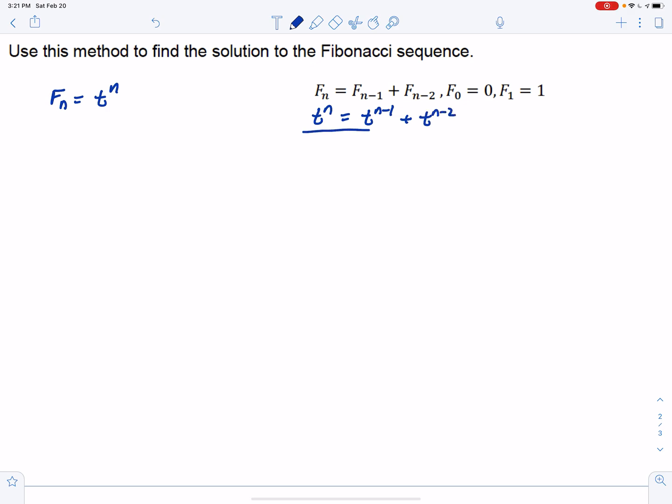And then we divide both sides by T to the n minus 2 because that's the lowest power among the three of them. And that means we're going to have T squared equals T plus 1.